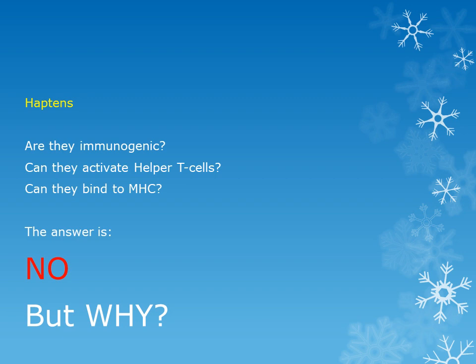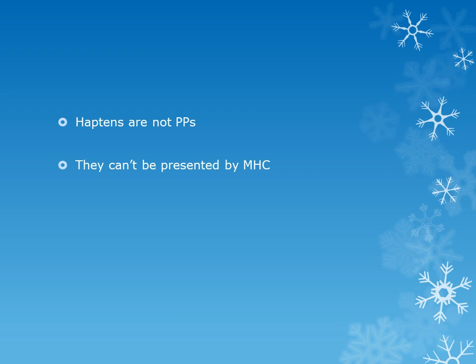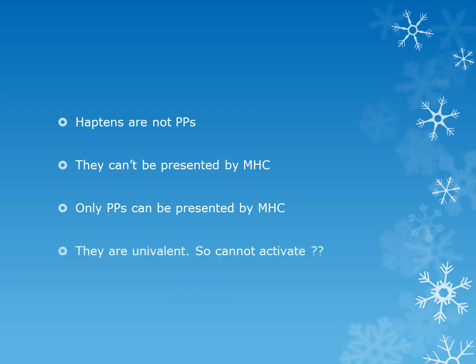On their own, haptens are non-immunogenic and not polypeptide in nature — this is why they cannot activate the immune response. Additionally, as they are univalent, they cannot activate B cells either. So on their own, they cannot activate T cells and cannot activate B lymphocytes.